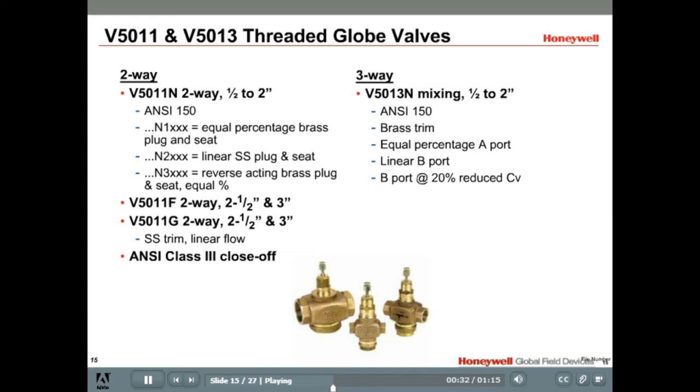The two-way globe valves are available from one-half inch to three inches, and as direct acting with equal percentage flow, and direct acting with linear flow characteristics, or as reverse acting with equal percentage flow characteristics. Both brass and stainless steel trim options are also available for two-way globe valves.